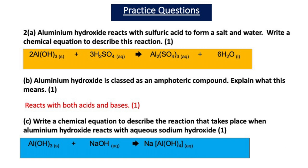Part C: Write a chemical equation to describe the reaction when aluminium hydroxide reacts with aqueous sodium hydroxide. The equation is: Al(OH)3 + NaOH → NaAl(OH)4(aq), forming the soluble complex.